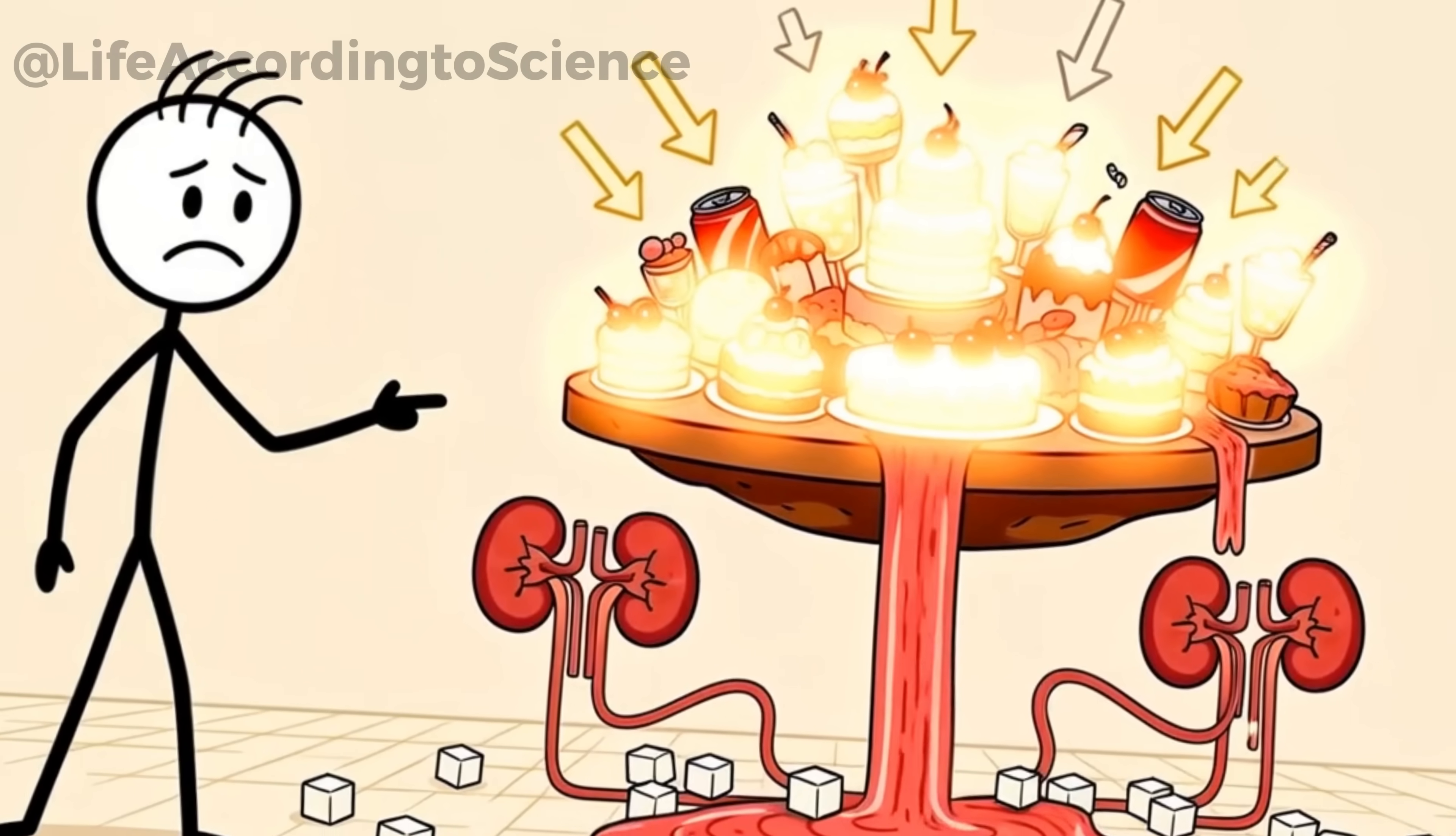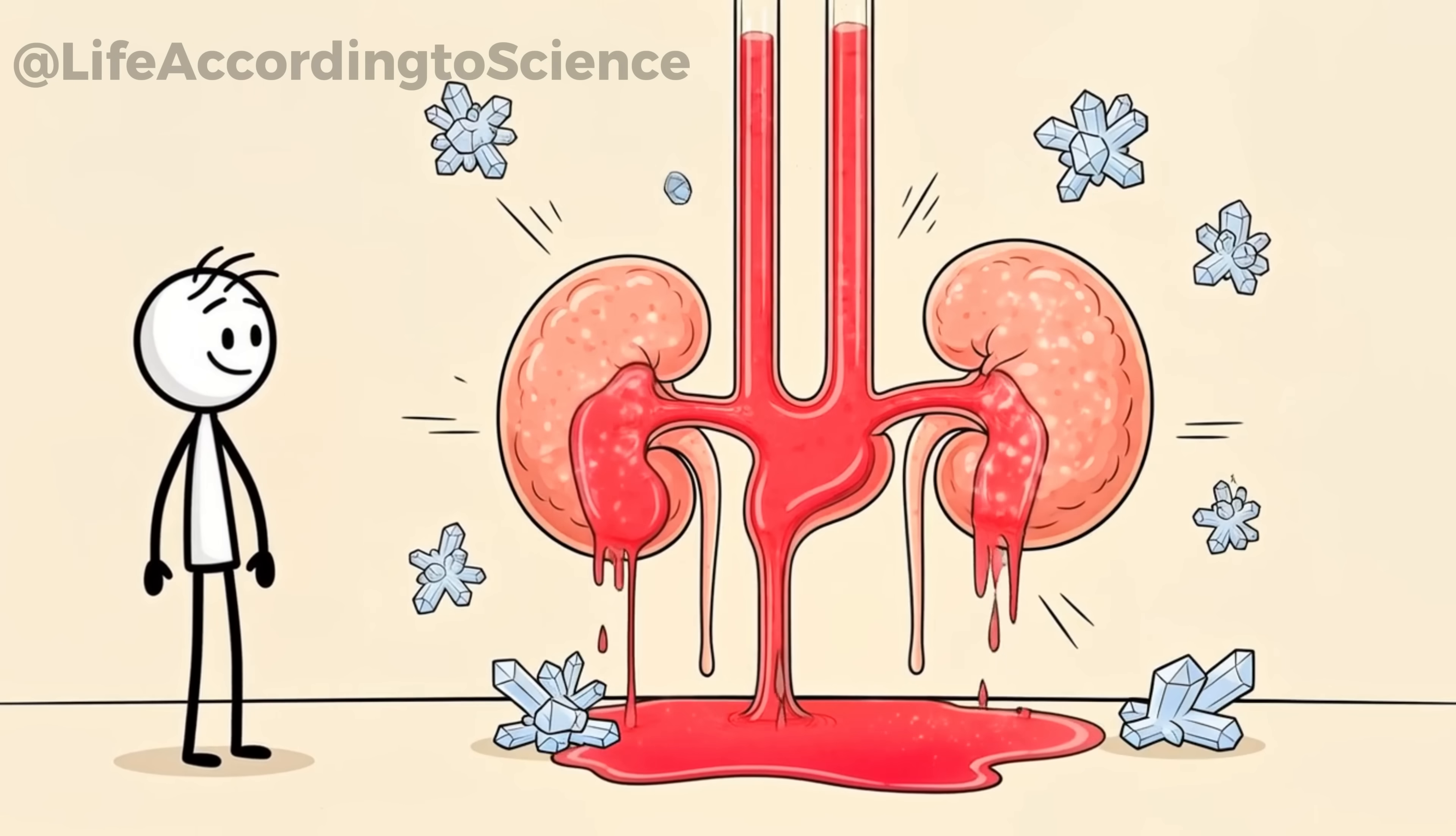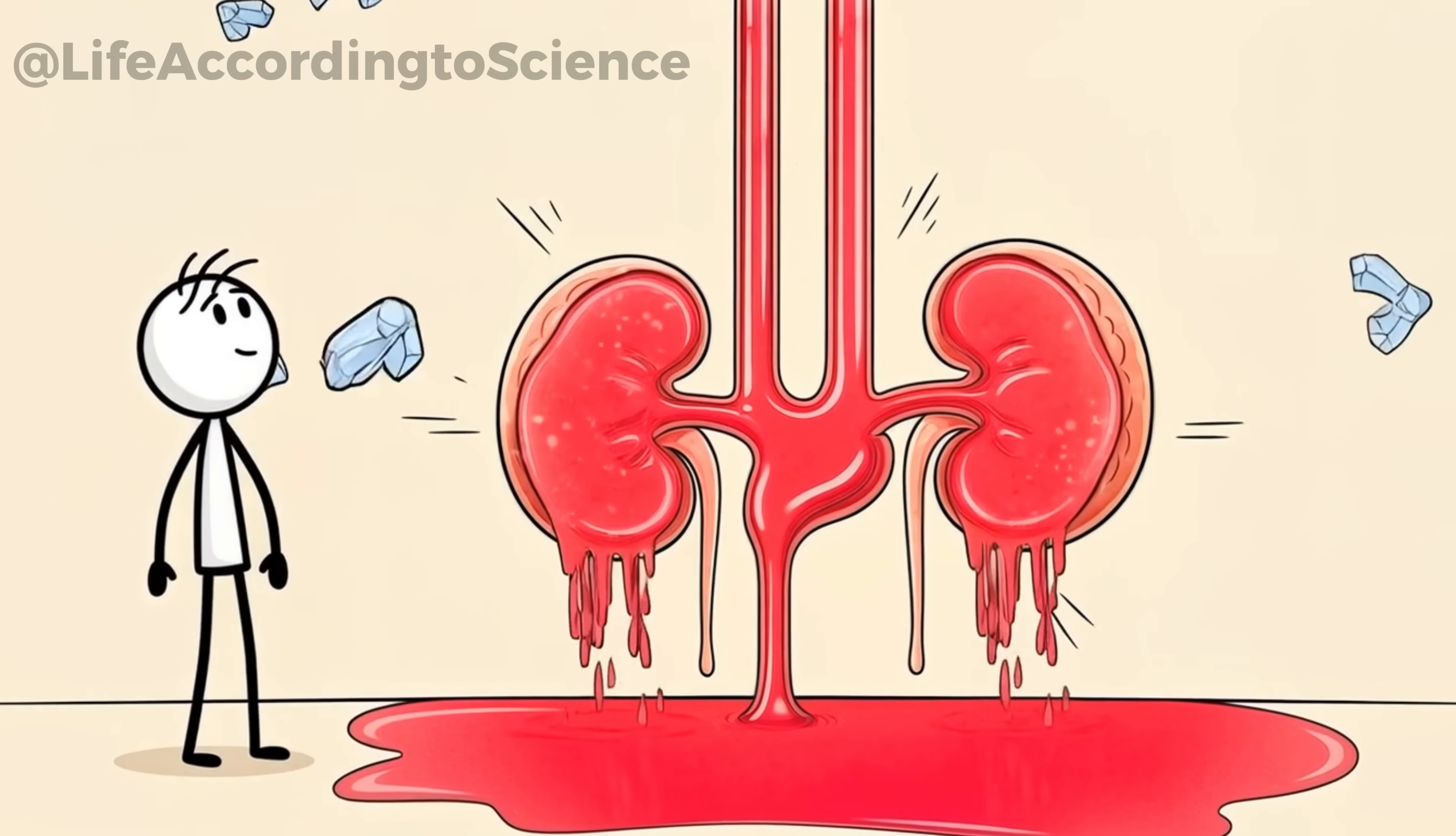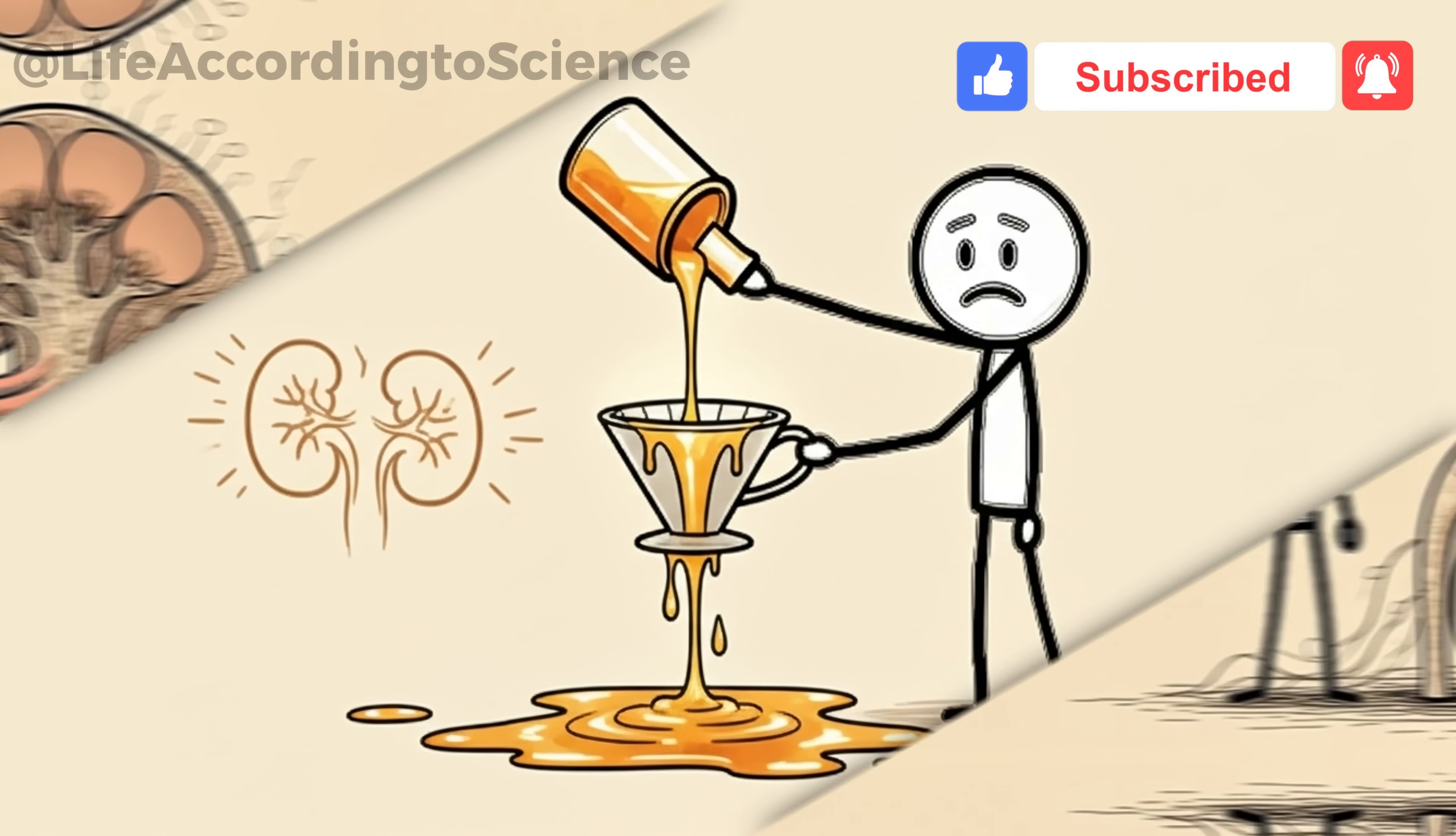Here's a fact most people don't know. Every time you consume sugary drinks or desserts, your kidneys must filter the excess glucose from your bloodstream. Unlike fats or proteins, sugar spikes hit fast, and the kidneys act like sponges, absorbing the overflow. Over years, this repeated overload damages the delicate nephrons, the microscopic filters inside your kidneys.